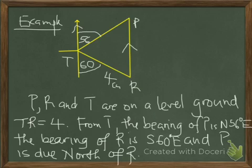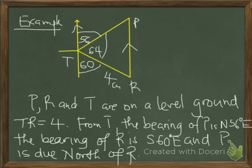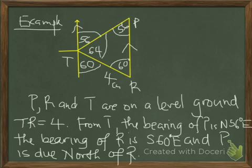Since the north-south line is 180 degrees, the angle at T between the two bearings is 180 minus 60 minus 56, which equals 64 degrees. Since these are parallel lines, there is a formation of alternate angles: this angle is 56 degrees, and by the same alternate angle concept, this angle is 60 degrees. That's how we use the concept of alternate angles in bearing.